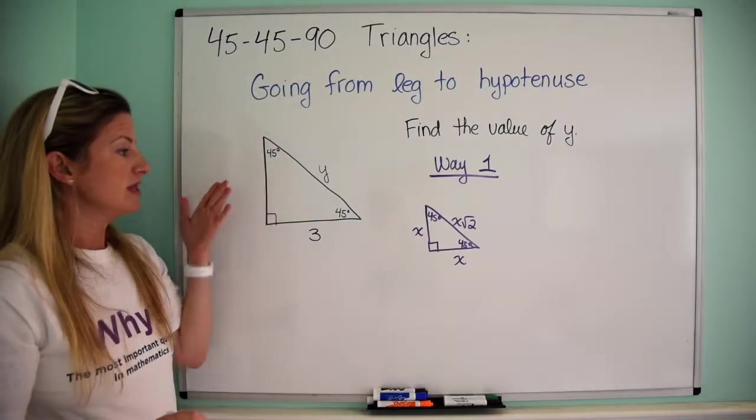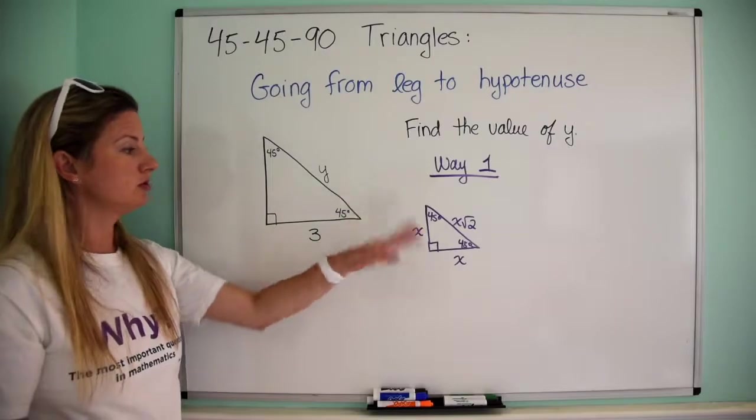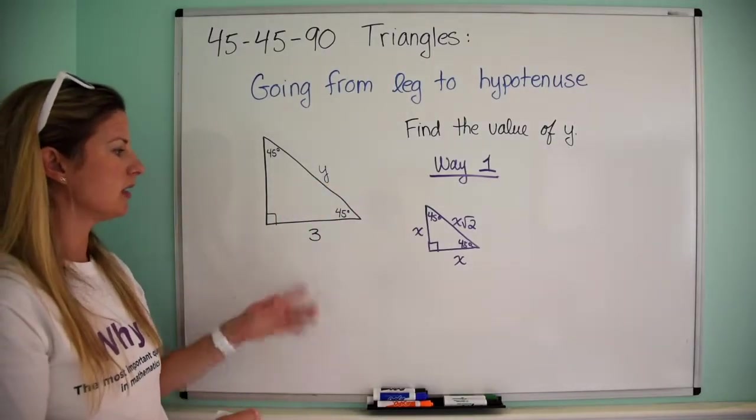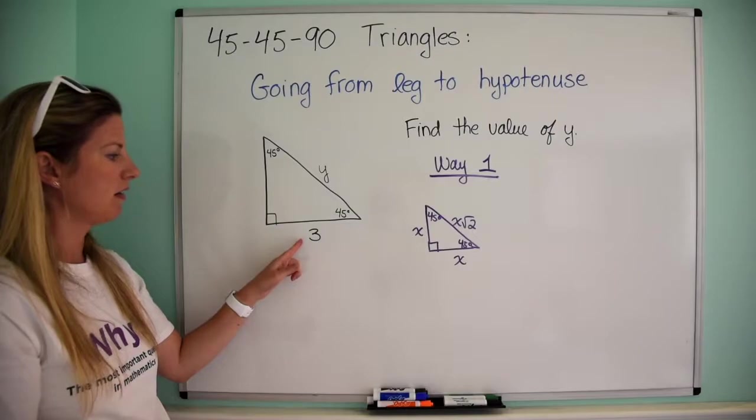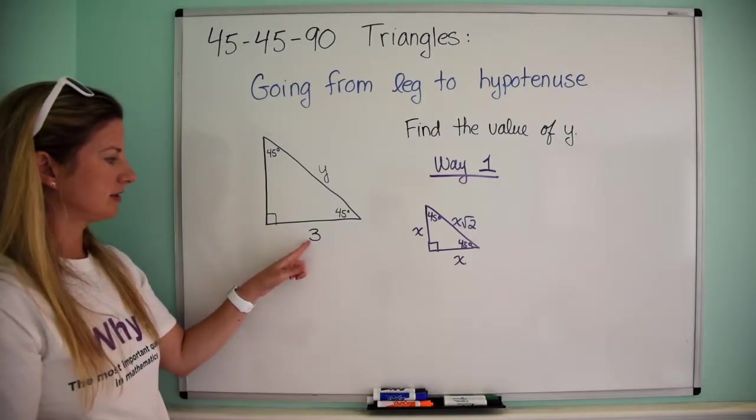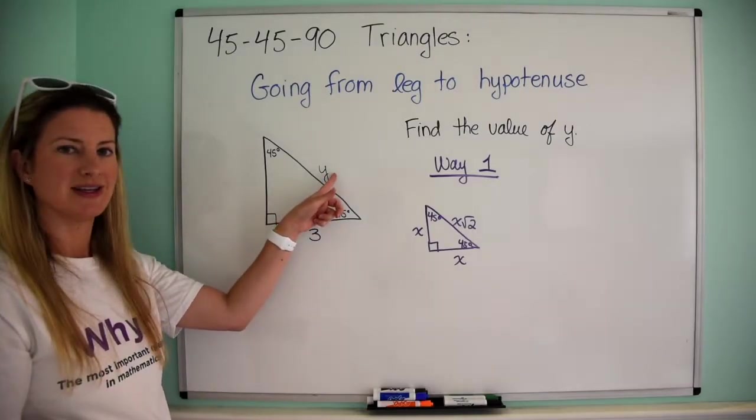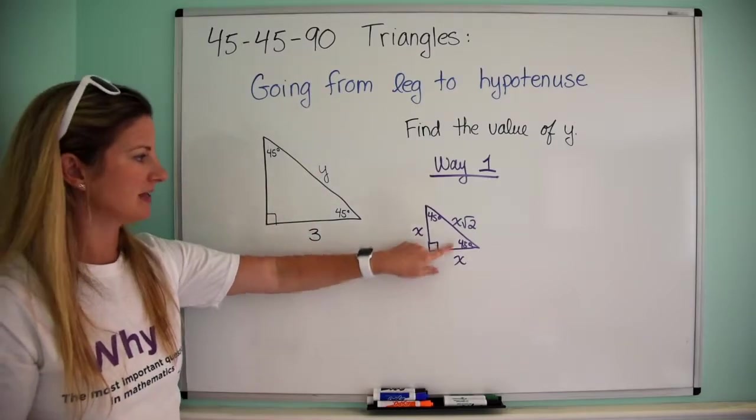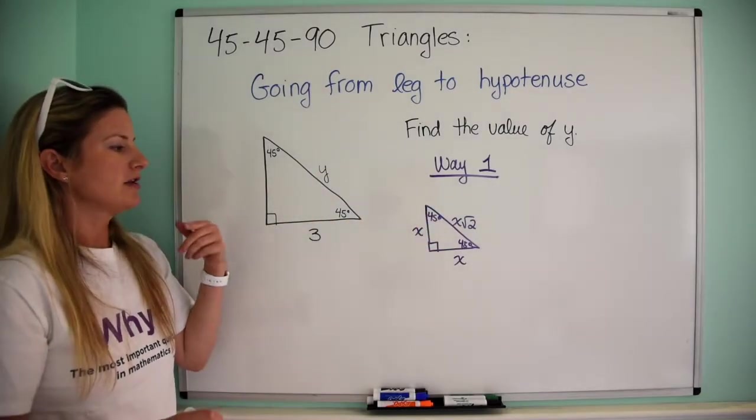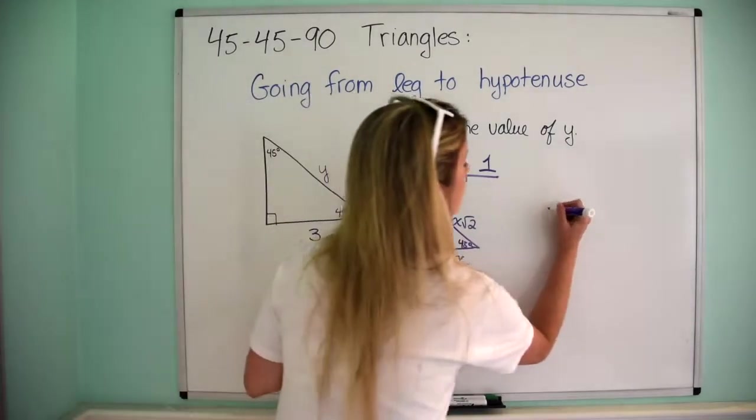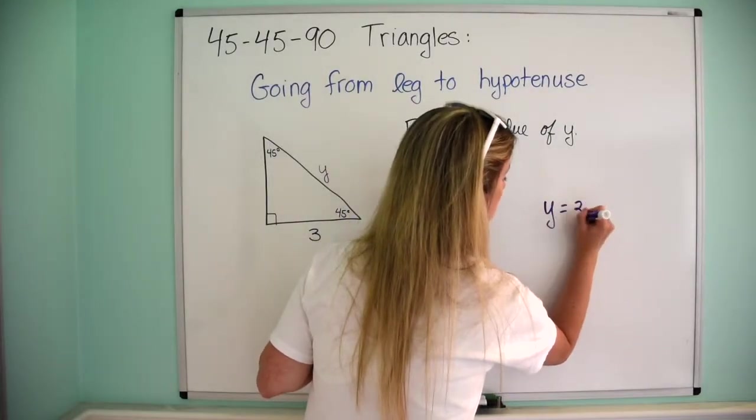Okay, so in this specific case we can use this relationship to solve for y. So we say, okay well in this specific triangle the leg is 3 which means the hypotenuse is 3 root 2 because it's x, x root 2.